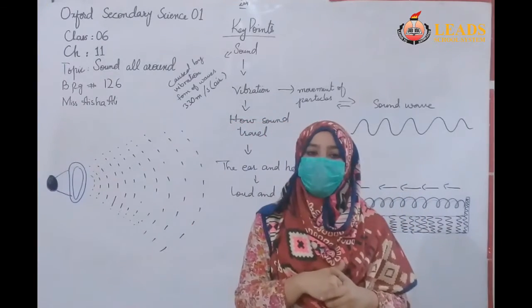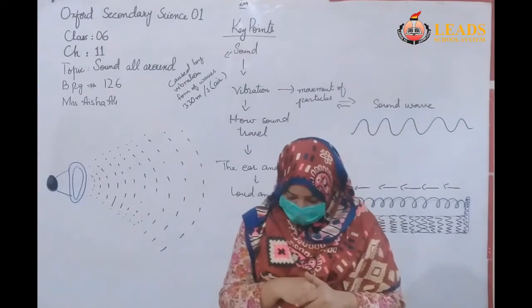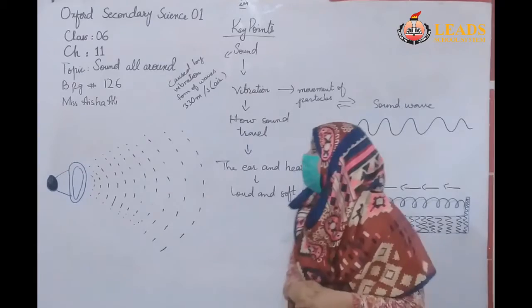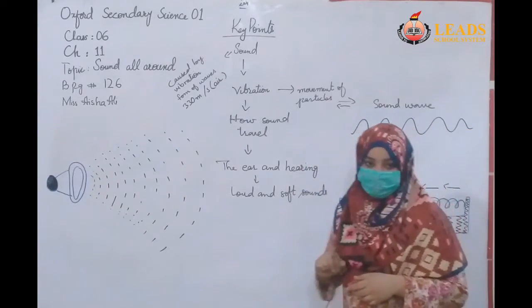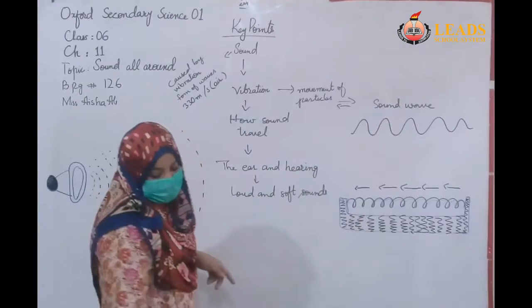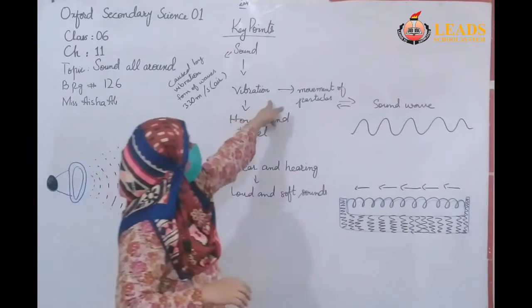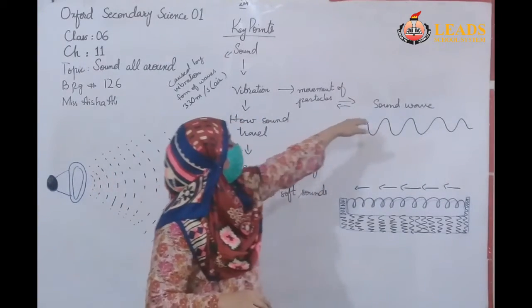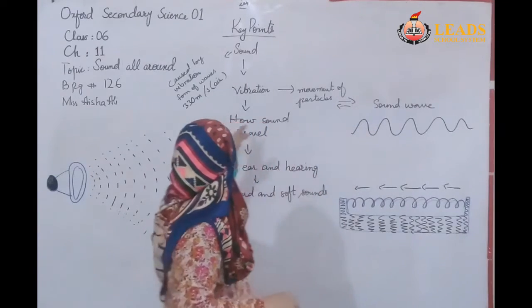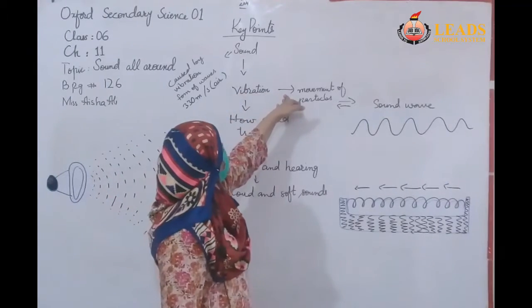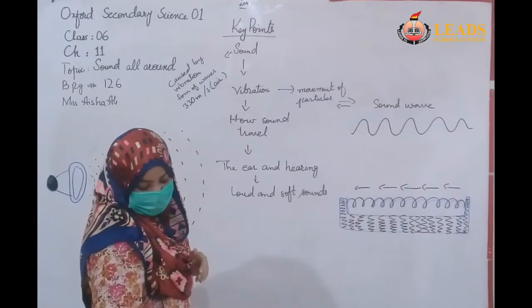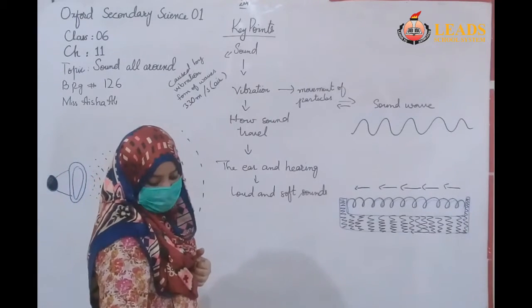For example, you can make a ruler vibrate. What is vibration? Vibration is the repeated backward and forward movement of particles. This sign indicates forward and backward movement. When particles vibrate, some are squashed together and others are spread apart.